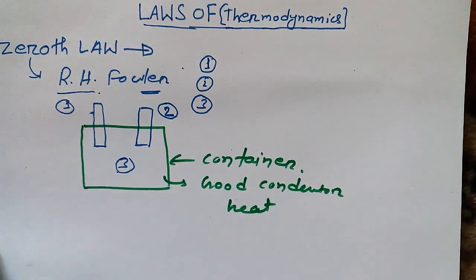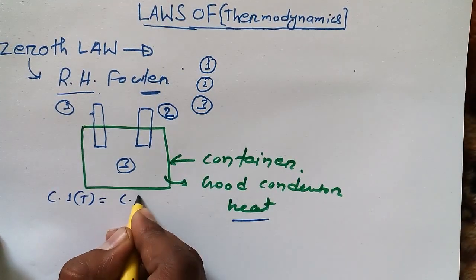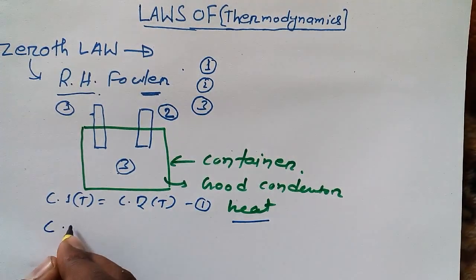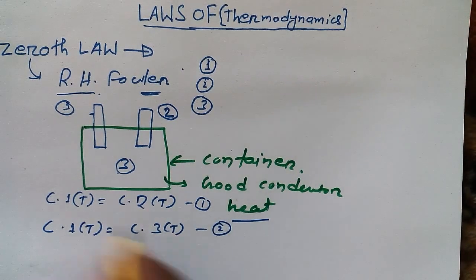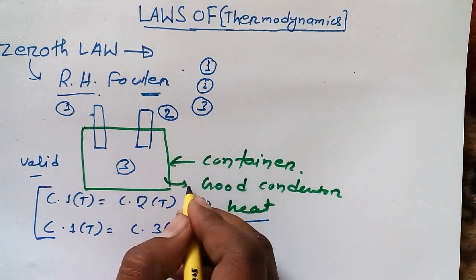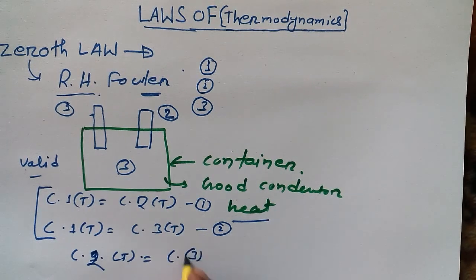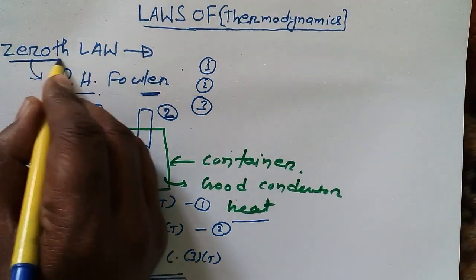So we have Component One (Rod One), Component Two (Rod Two), and Component Three (the container), and all of these are good conductors of heat. If Component One temperature equals Component Two temperature (Equation 1), and Component One temperature equals Component Three temperature (Equation 2), then we can conclude that Component Two temperature equals Component Three temperature. This is the conclusion of the Zeroth Law.